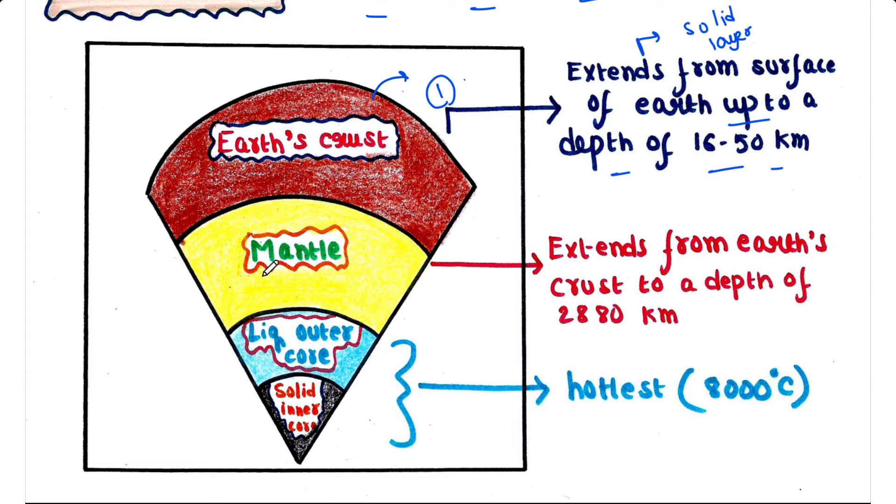Next is mantle. Mantle extends from the earth's crust to the depth of 2880 kilometers. This layer is made up of hard rock. And then the third layer is the core. This core is divided into solid inner core and liquid outer core. The core is the hottest part of the planet with a temperature of 8000 degrees Celsius.